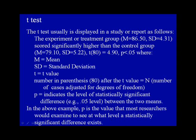where M equals the mean, SD equals the standard deviation, t equals the t-value. The number in parenthesis after the t-value equals N, which is the number of cases adjusted for degrees of freedom, and p indicates the level of statistically significant difference between the two means.